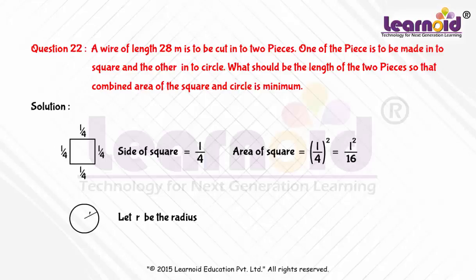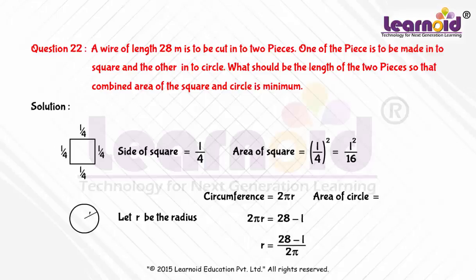Let R be the radius of the circle. Then the circumference of the circle is 2πR. The length of wire used to make the circle is 28 minus L, so 2πR is equal to 28 minus L. Therefore, the area of the circle is equal to πR², which equals π times (1/4π)² times (28 minus L)², giving (28 minus L)² by 4π.